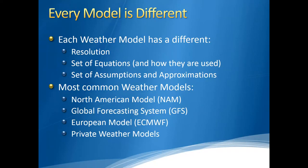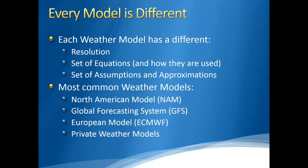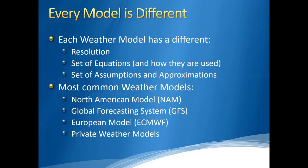Every model is different. Different models have different strengths and weaknesses, different resolutions, different sets of equations and how those equations are used, and different assumptions and approximations. Here in the United States, there are three main weather models: the North American Model, the Global Forecasting System, and the European model — also known as the ECMWF. These three models each have different focuses and make different predictions, and as meteorologists we look at all of those predictions to develop a forecast.